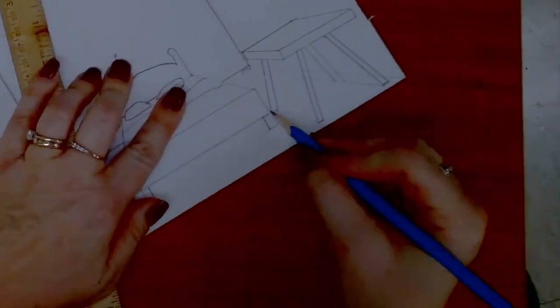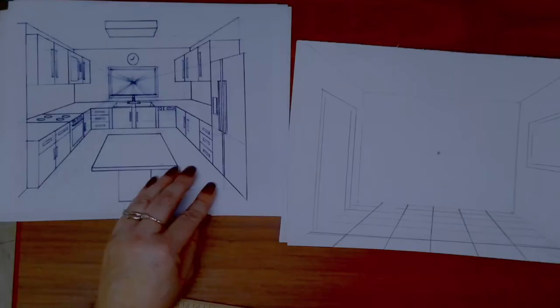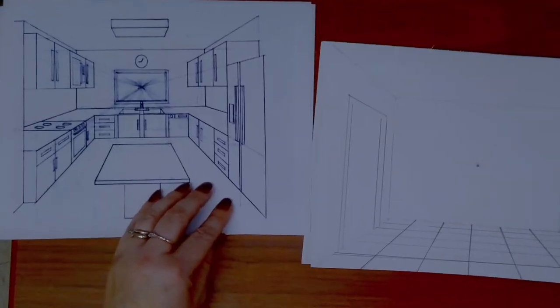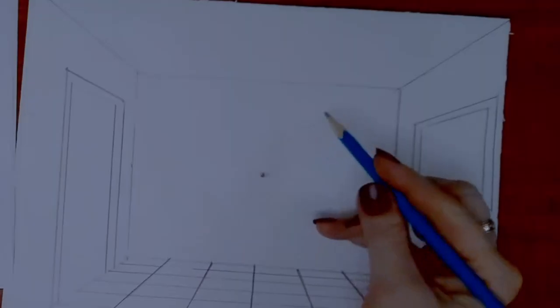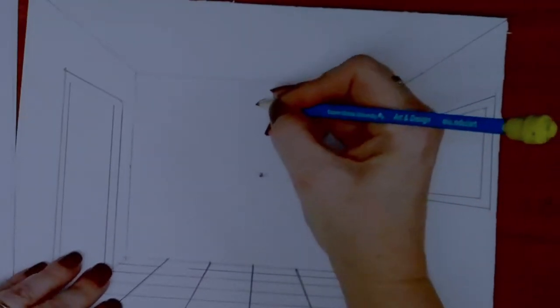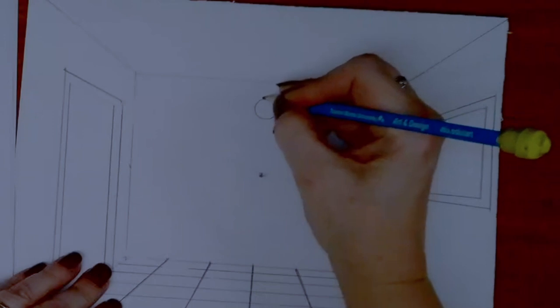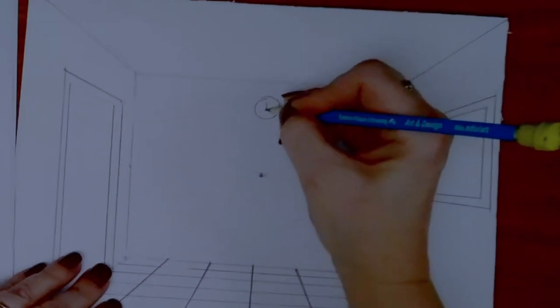Erase all those extra orthogonal lines. All right, one last thing. Let's look at this kitchen example again. If I have something hanging on the back wall like a clock or even some wall art, I can just draw it. It does not have to go back towards the vanishing point since in space it is even with the vanishing point.